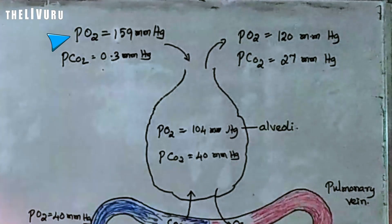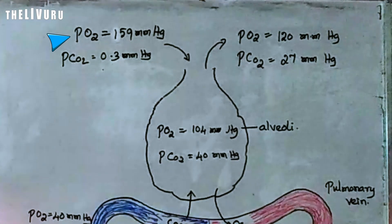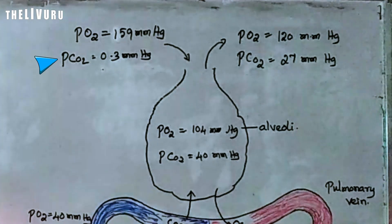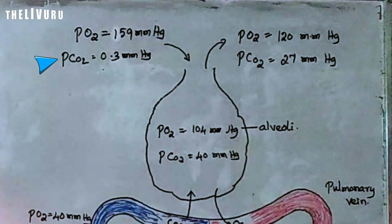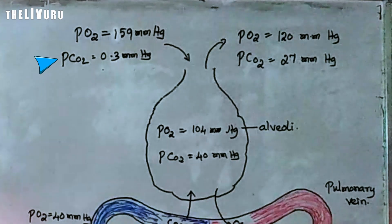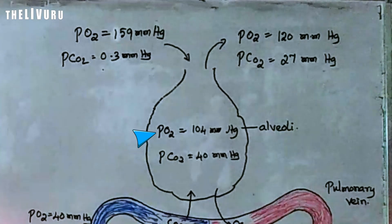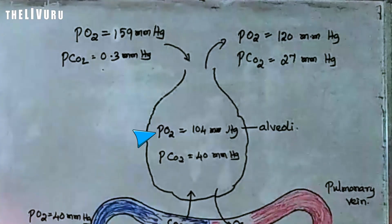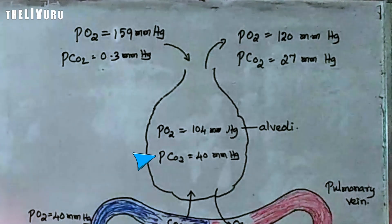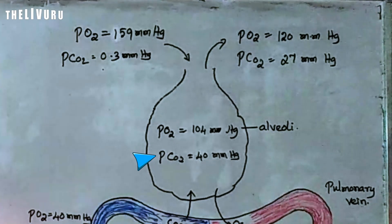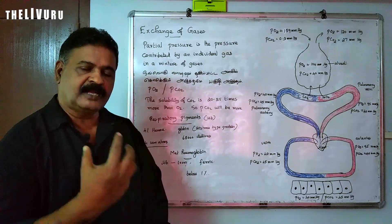The partial pressure of oxygen in atmospheric air is 159 mmHg, and the partial pressure of carbon dioxide is 0.3 mmHg. In the alveoli, the partial pressure of oxygen is 104 mmHg and the partial pressure of carbon dioxide is 40 mmHg.